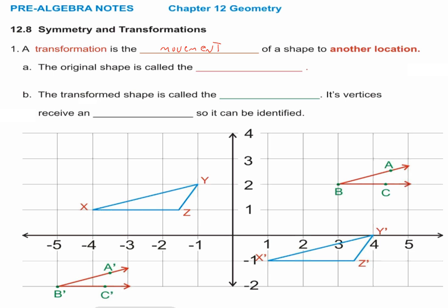Now, the original shape is called the pre-image, and the transformed shape is called the image. A word associated with that is also translation. When you label the new shape — the image — you write the vertices with an apostrophe so it can be identified.